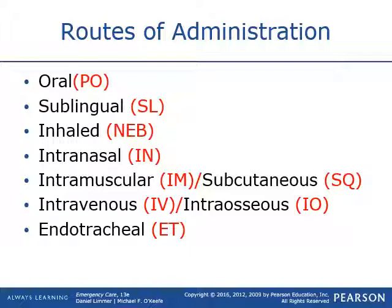Intravenous and intraosseous are ALS routes done by paramedics. Intravenous is given through an IV straight into the bloodstream. Intraosseous goes into the bloodstream via the bone using an IO drill, because in the middle of the bone is marrow and blood. Endotracheal is rarely used anymore, but if a patient gets intubated by a paramedic, some medications can go down the ET tube and be absorbed that way.